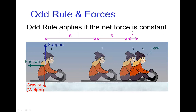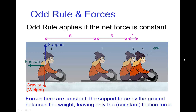The connection with what we've discussed in terms of the odd rule is that the odd rule applies whenever the net force is constant. Going back to the example of the girl sliding, there's the frictional force — and we said that's constant — as well as the force of gravity and the support force of the ground, which are in balance so we don't need to consider them. Because the net force is constant, the spacings follow the odd rule. The support force is balanced by the weight, leaving only the constant frictional force.